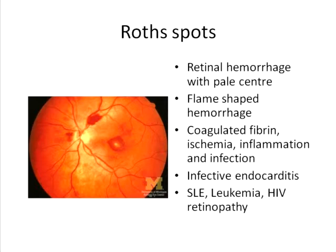Roth spots are fundoscopic findings which are retinal hemorrhages that look like a flame — a circumscribed hemorrhage with a central pale area, comparable to the central pallor seen in a flame. The content of these flame-shaped hemorrhages is coagulated fibrin which includes platelets, and the central pallor is due to ischemia. They contain inflammatory infiltrates and infective pathogens.